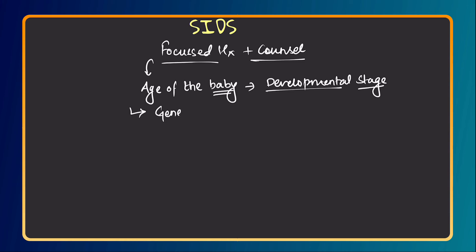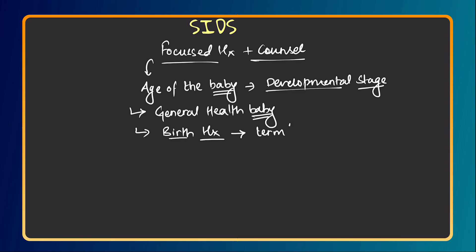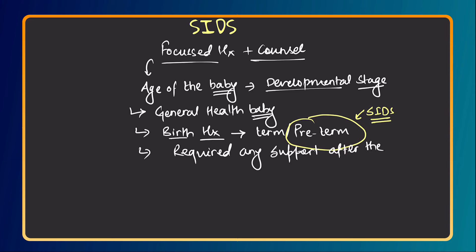The next question is about the general health of the baby: 'Was Andrew sick when this happened? Did he have any recent illnesses or any concerns?' Then move to birth history. Ask whether the baby was born term or preterm, because preterm babies are at increased risk of SIDS. Also ask if the baby required any support after birth — whether admitted to an ICU or requiring resuscitation — to understand post-birth interventions.